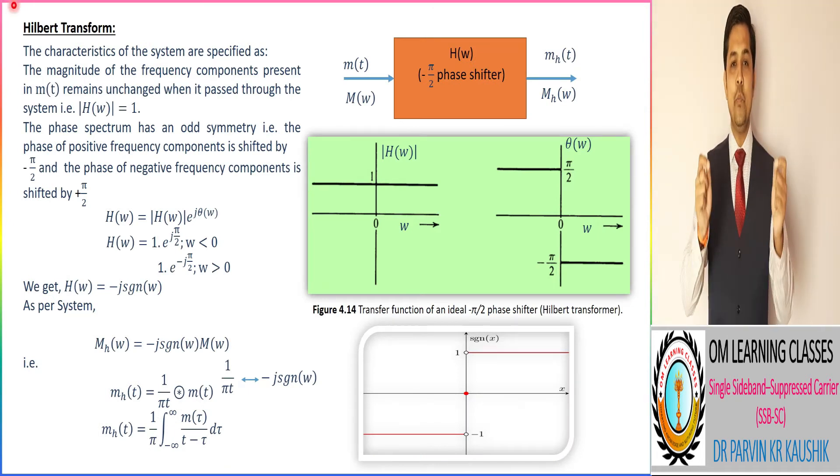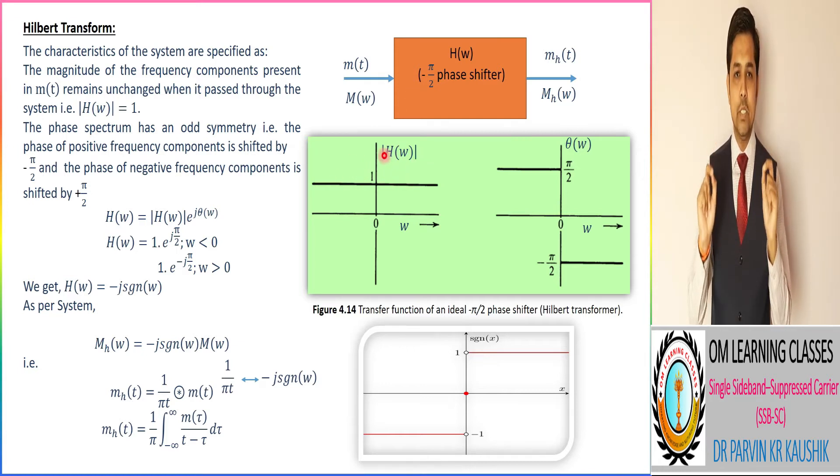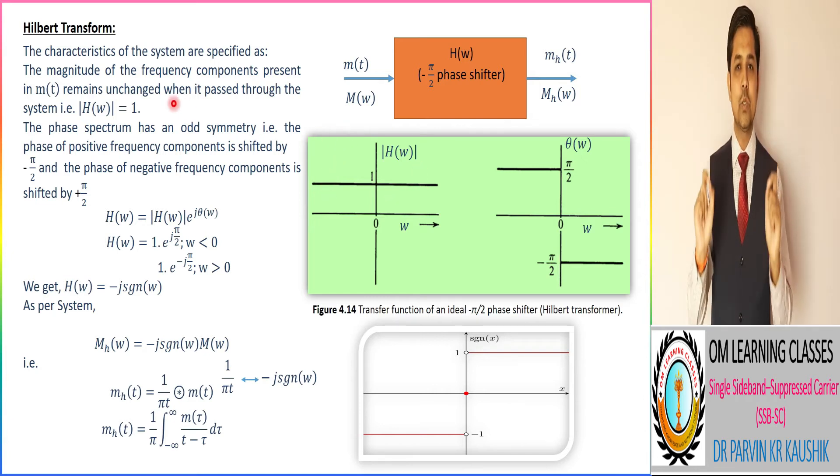Now we take the proof of Hilbert transform. For that we consider a system that has two characteristics. One characteristic is that its magnitude of the frequency component present in MHD remain unchanged when it passes through the system.